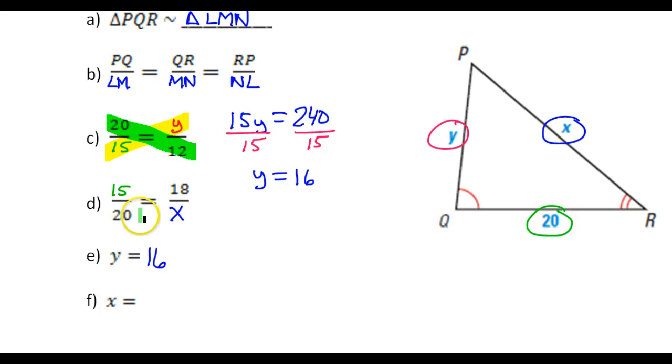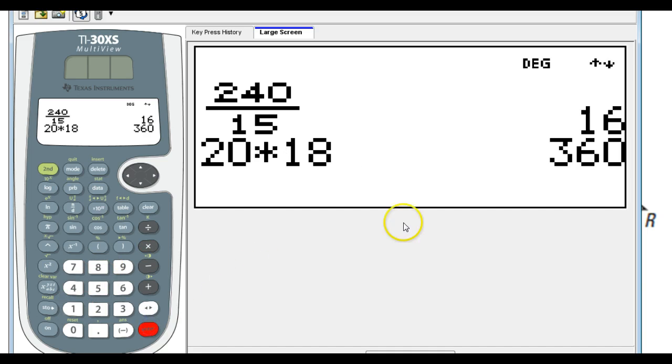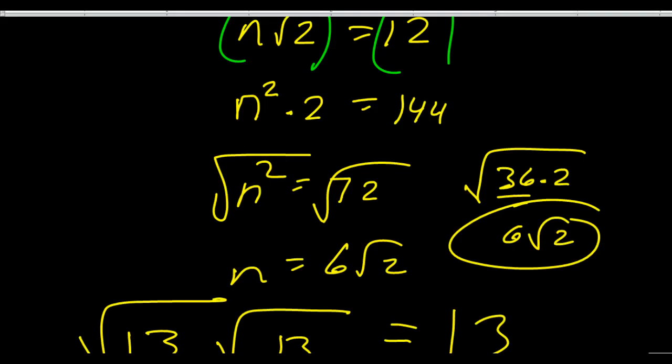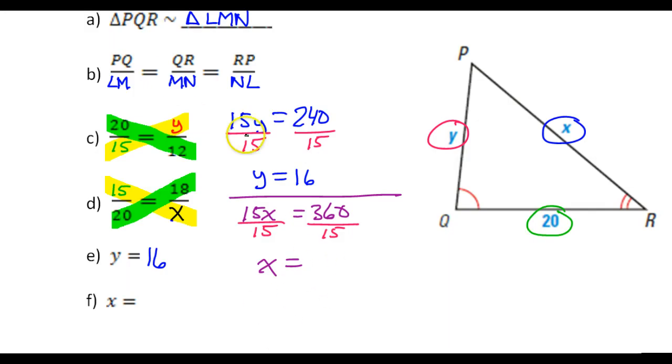What about X? I'm going to do the same thing. I'm going to do my cross-multiplication. So 15 times X, so that'll be 15X and then 20 times 18, so that's 360. And then I could divide both sides by 15. And that's 24.